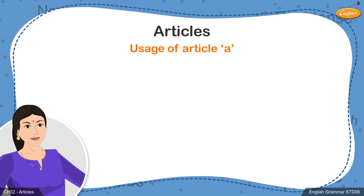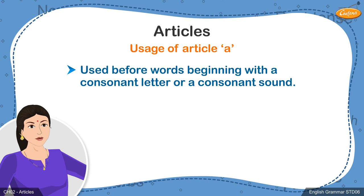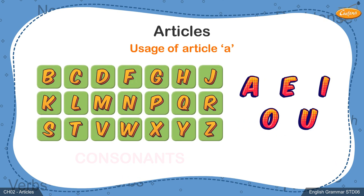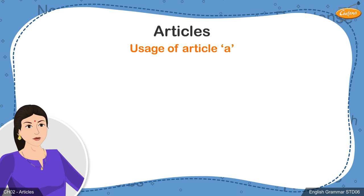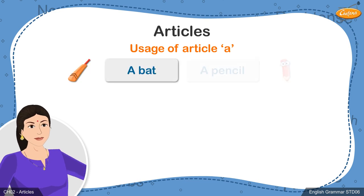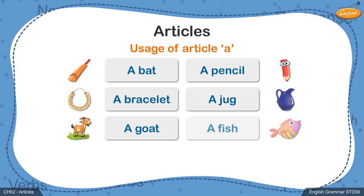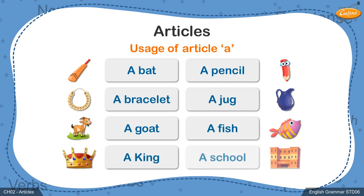Let's start with a. The article a is usually used before words beginning with a consonant letter and a consonant sound. All alphabets except the vowels are consonants. The vowels a, e, i, o, and u are not included in the list of consonants. All these words begin with consonant letters and sounds, and that's why we use the article a before them.